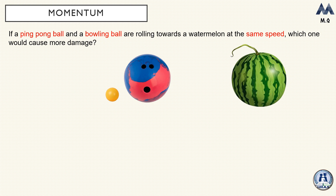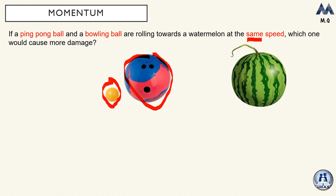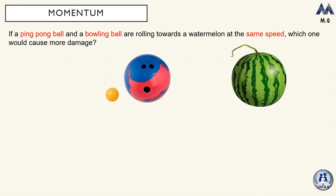To get a better understanding of momentum, consider this example: a ping pong ball and a bowling ball are rolling towards a watermelon at the same speed. Which one will cause more damage? By intuition the bowling ball will cause more damage — because it has more mass. Although both are moving at the same speed, the bowling ball is more massive and therefore causes more damage.